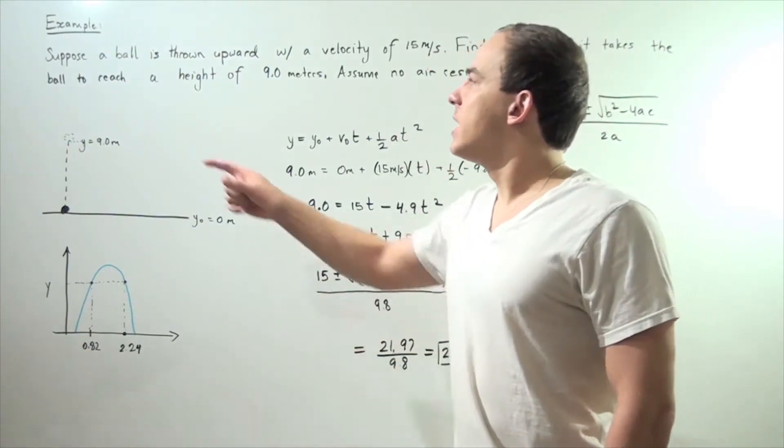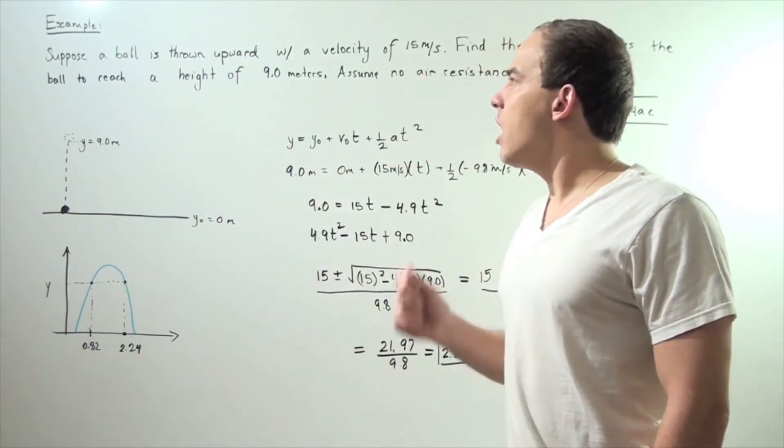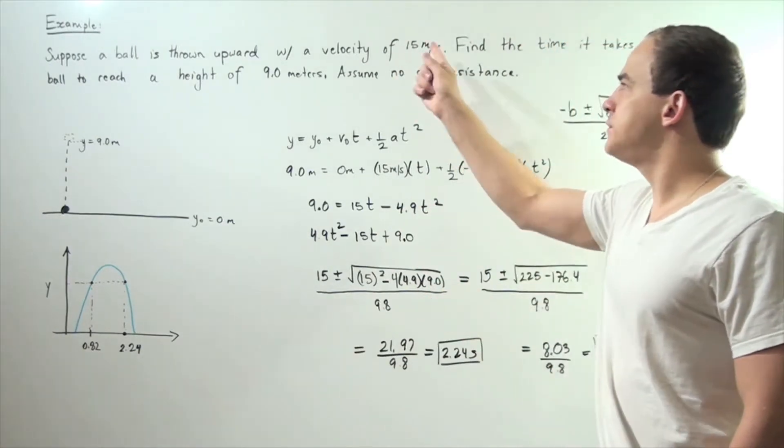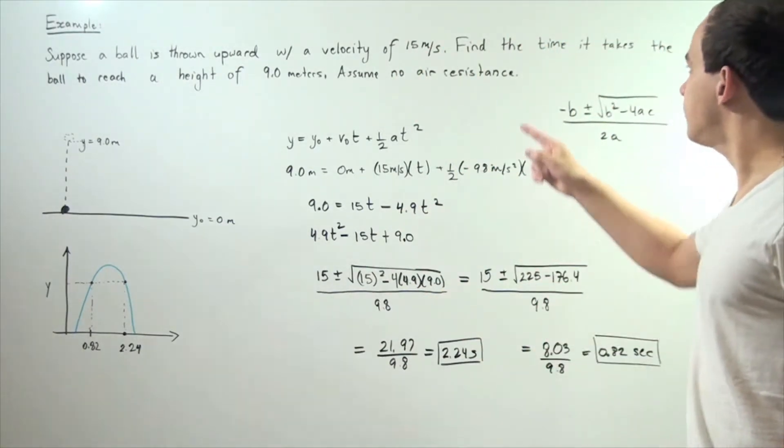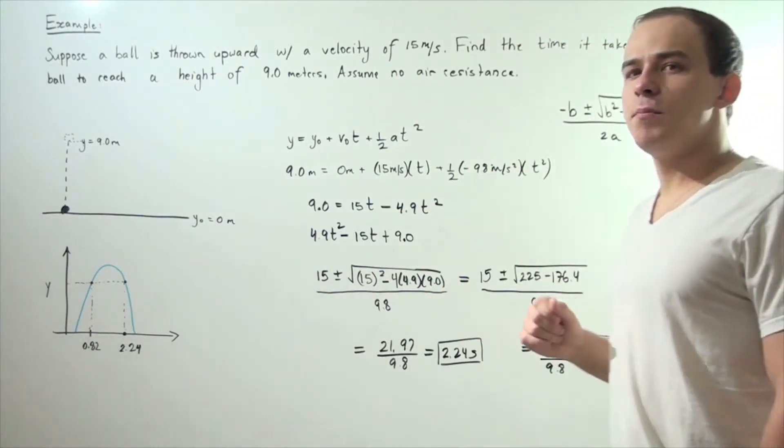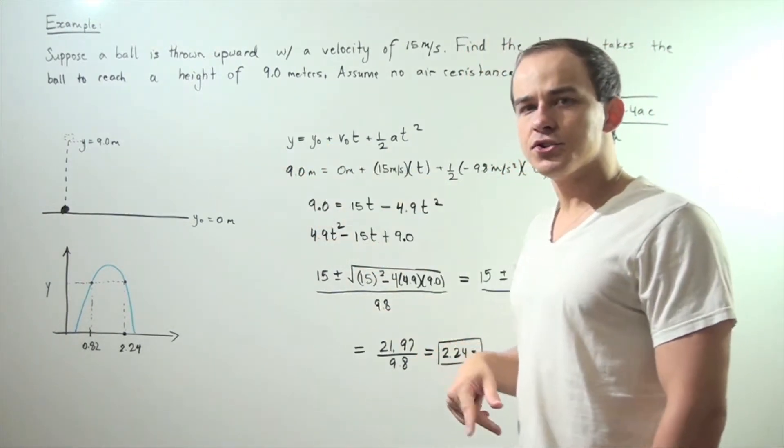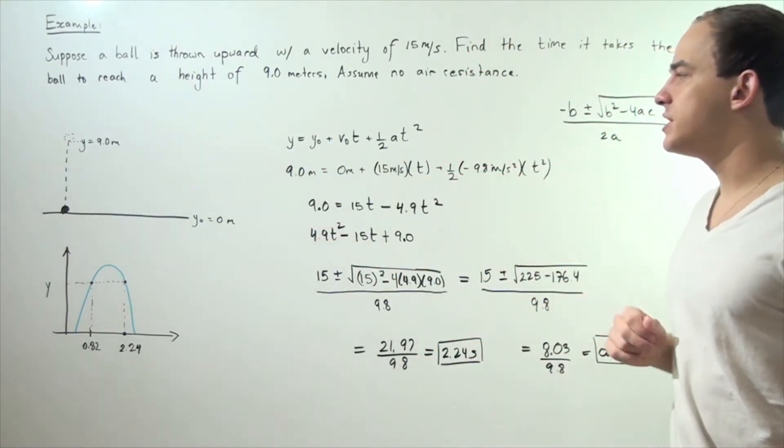So let's look at the following problem. Suppose a ball is thrown upward with a velocity of 15 meters per second. Find the time it takes the ball to reach a height of 9 meters assuming no air resistance.